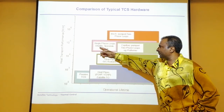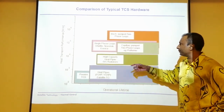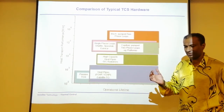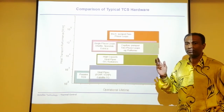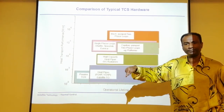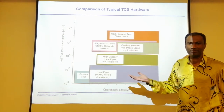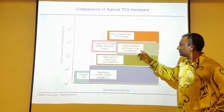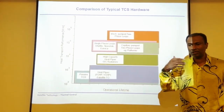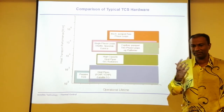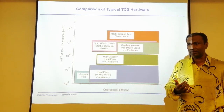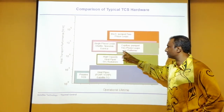We also have single-phase loops — where there is no phase change, meaning water remains as water from one end to the other. Or you can have a two-phase category with a pump, where liquid water, for example, becomes vapor, gets condensed, and becomes liquid again. So you have either a single-phase or a two-phase option.